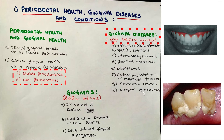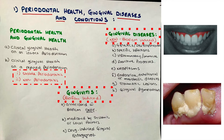Gingival pigmentations are now considered a gingival disease on the classification. The last subheading for the first category is gingivitis, biofilm-induced — the plaque-induced one. It's associated either with biofilm only, or it's mediated by systemic or local factors, and also drug-induced gingival enlargement — that's the one from calcium channel blockers and similar medications that cause gingival overgrowth.